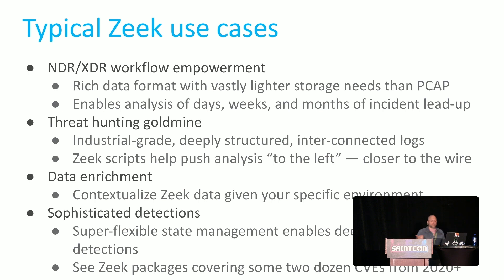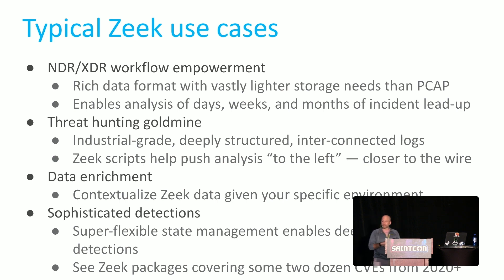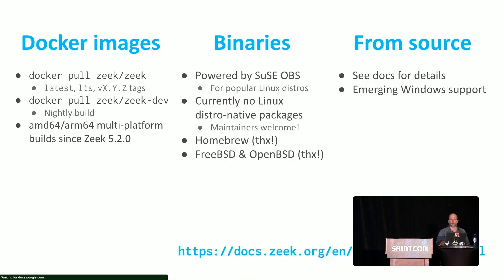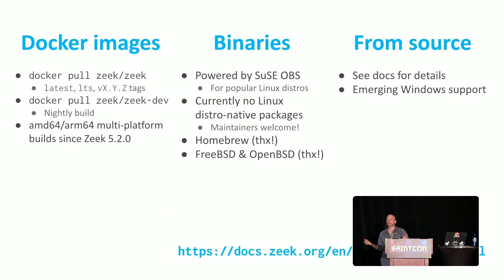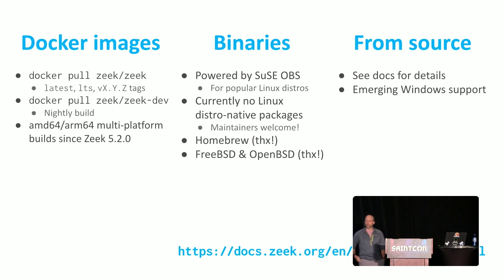We also have sophisticated detections. There's a great community that builds CVE detections when they come out, and we have over two dozen CVE detections from the last three years. To get Zeek, outside of projects like Security Onion and Malcolm, you can pull Docker images, pull binaries, or compile from source.